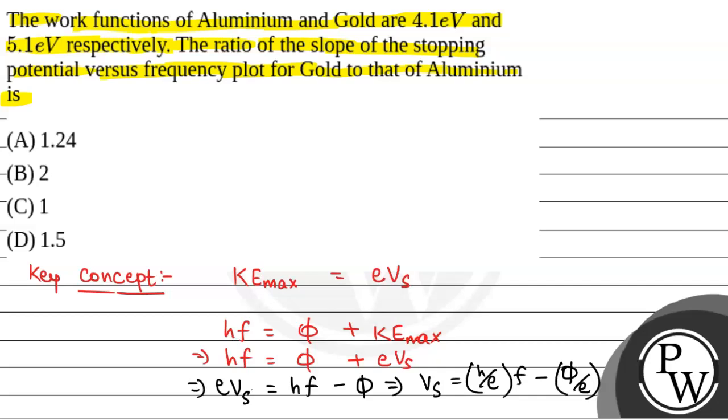We have been given the work functions of aluminum and gold are 4.1 and 5.1 electron volt respectively. We have to find the ratio of slope of the stopping potential versus frequency plot.